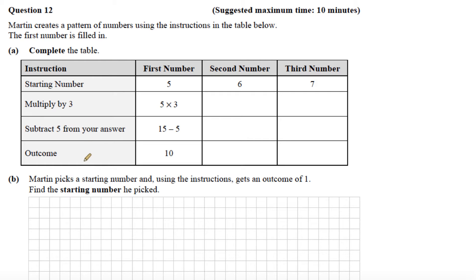We can see the instructions down here on the left. The first number is 5, that's our starting number. The next instruction says multiply by 3, so we have 5 by 3. And 5 by 3 is 15.